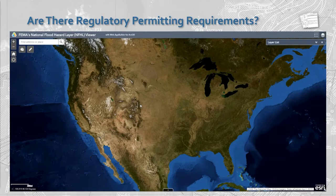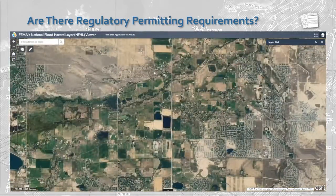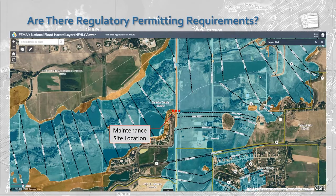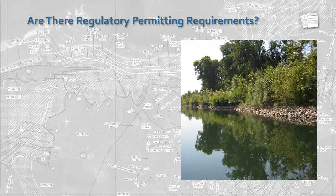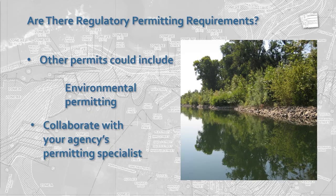What is the FEMA regulatory floodplain status at the site? If the problem is in a stream or river that is part of a FEMA floodplain, any fixes will require a floodplain development permit from either FEMA or a state or local agency. The National Flood Hazard Layer viewer can be a quick way to check if your site is in a FEMA floodplain. Even if the site is not in a FEMA floodplain, the authority having jurisdiction may still require floodplain permitting. Environmental permitting may also be required — be sure to collaborate with your agency's permitting specialist about any potential repair.